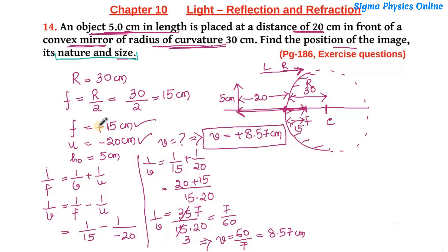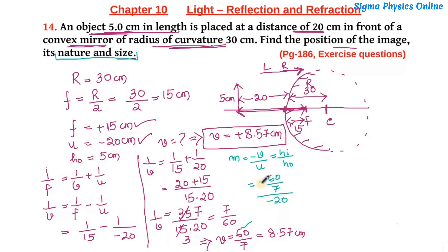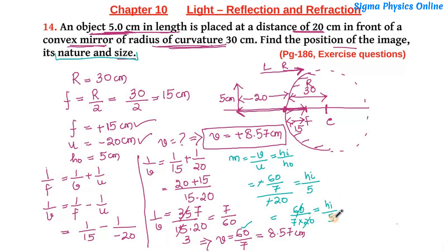To find the nature and size of the image, we use the magnification formula: m = −v/u = height of image / height of object. The image distance is 60/7 and the object distance is −20, so m = −(60/7)/(−20). Don't forget to apply the proper signs with the values of u and v. The height of the object is 5 cm.